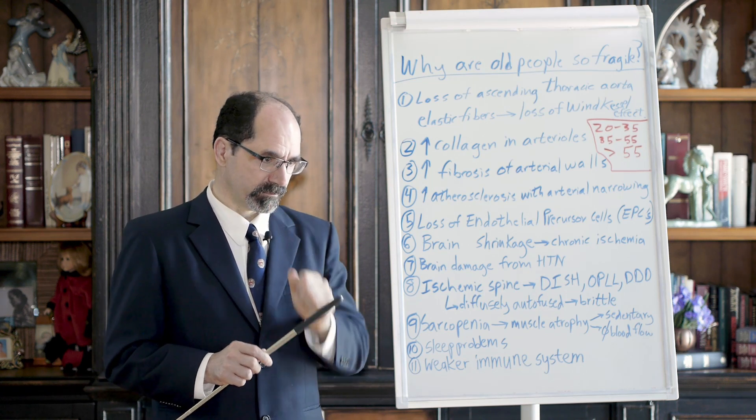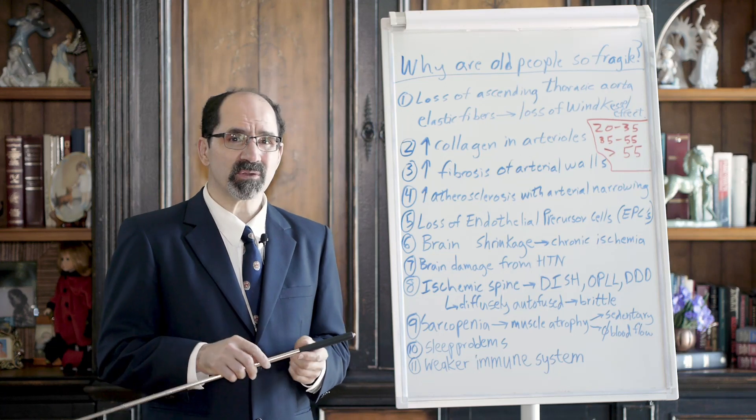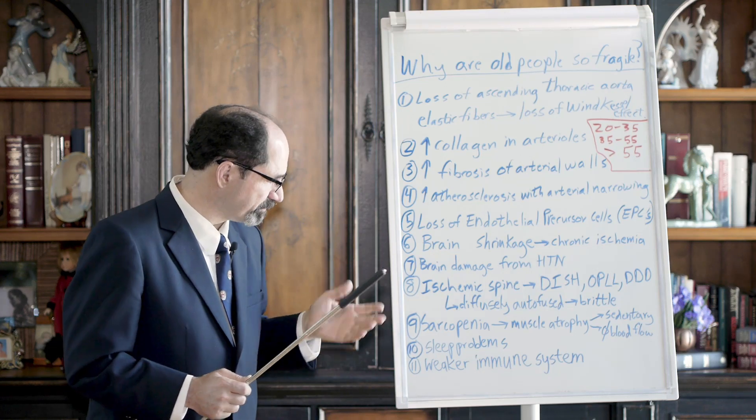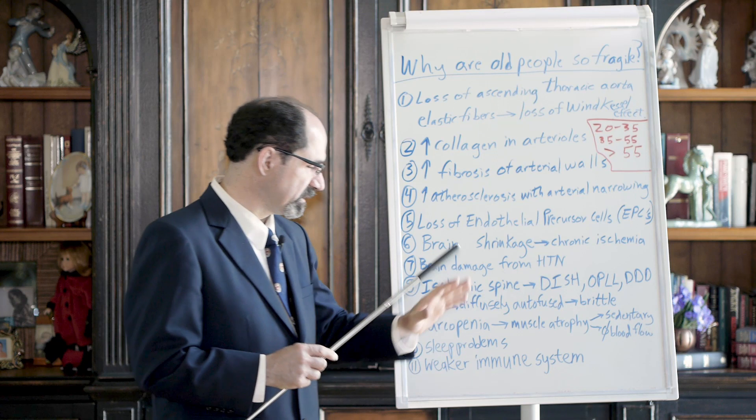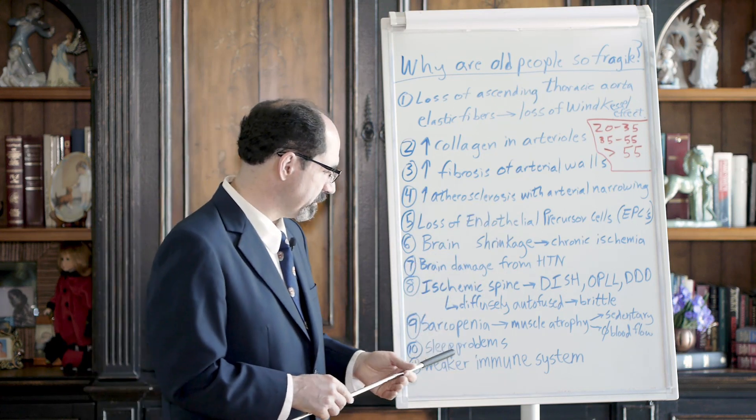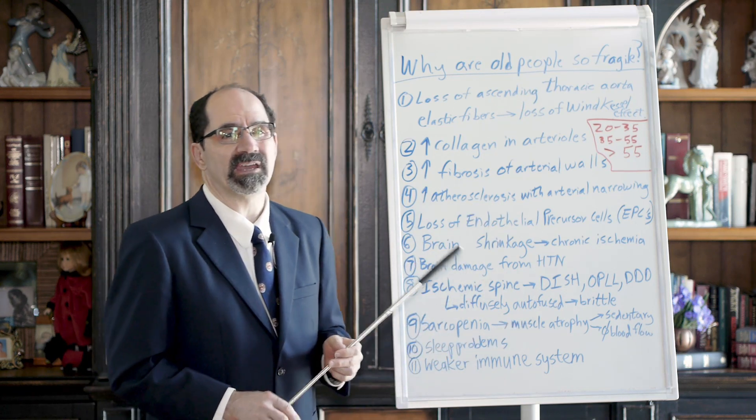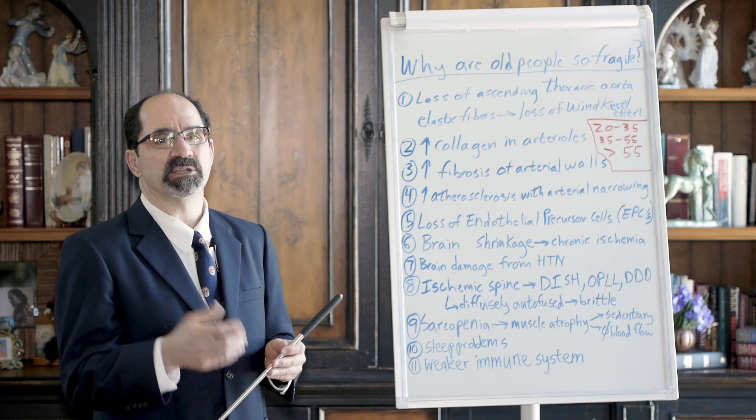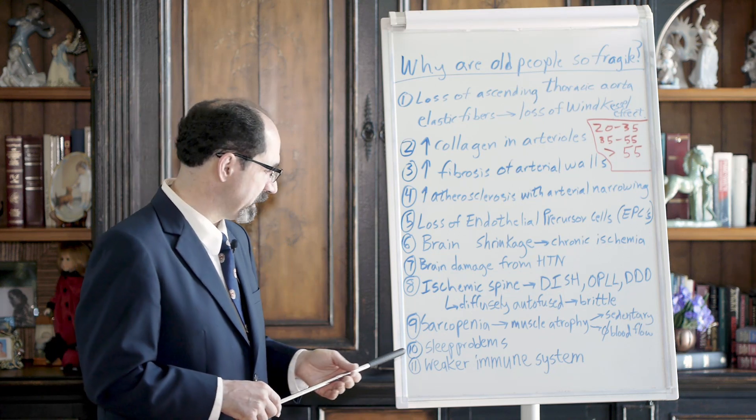At least have a carbon filtration for any water you drink, preferably for the whole house. Ideally also have a reverse osmosis in your kitchen if possible. The sleep lecture will go into all the details, but if a person is not sleeping well, they can't clean their brain. Their brain accumulates waste products and they're more predisposed to becoming demented.